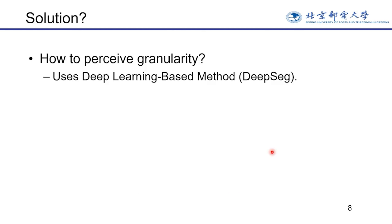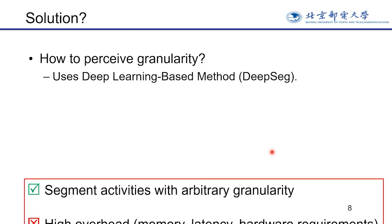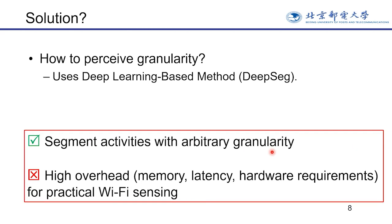So how to perceive granularity? In 2020, DeepSec first described the importance of granularity awareness and provided an offline solution using a deep learning model. DeepSec successfully recognized the granularity of activities, enabling it to segment activities with arbitrary granularity. However, due to the high overhead of the deep learning model, such methods are difficult to use online.